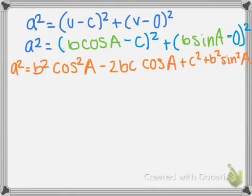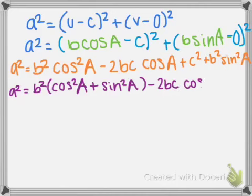Now we're going to factor the b squares out of the first and last terms to get a squared equals b squared times cosine squared A plus sine squared A minus 2bc cosine A plus c squared.